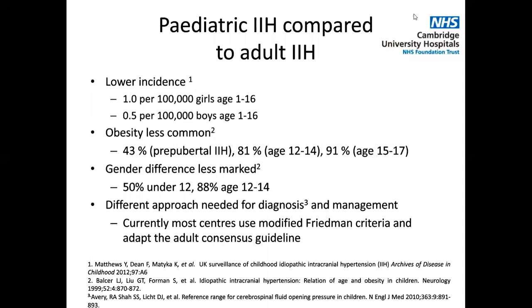I wanted to give a comparison between paediatric IH and adult IH. Firstly, we see a lower incidence of IH in children compared to adults. Secondly, obesity as a whole is less common in paediatric IH, although it depends on the age group. In pre-pubertal children, obesity is much less common — only 43% of pre-pubertal children with IH are obese — whereas in older age groups, it's reaching similar percentages to those seen in adults. The gender difference also seems less marked in children.